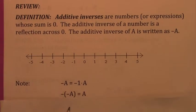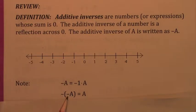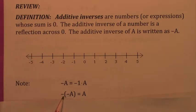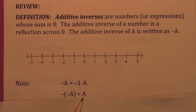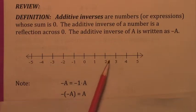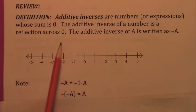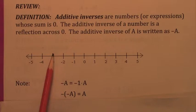This has also come up before. What is the opposite of the additive inverse of a number? The opposite of the additive inverse of a number is the number itself. All that's saying is when you reflect the number across zero once to get its opposite, and then you reflect it again, you get back to where you started.